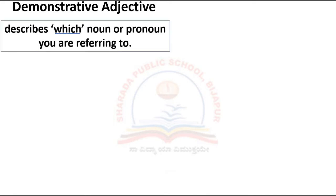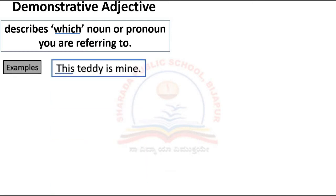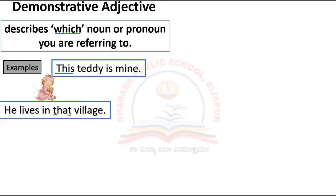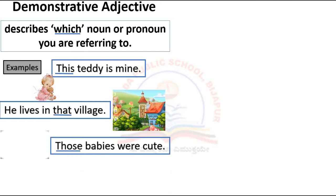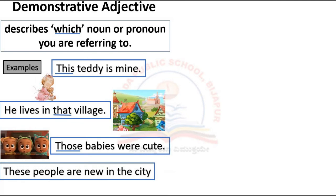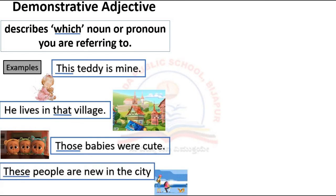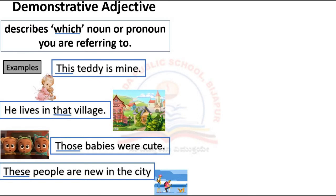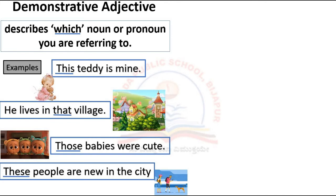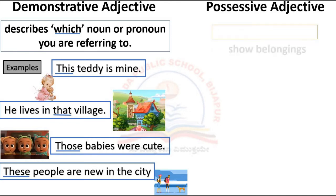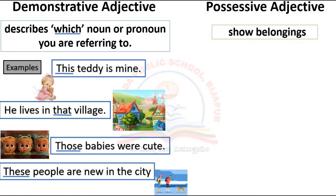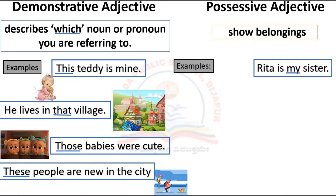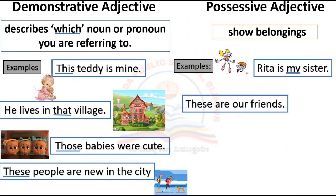Demonstrative adjective describes which noun or pronoun you are referring to. Examples: 'This teddy is mine.' 'He lives in that village.' 'Those babies were cute.' 'These people are new in the city.' The underlined words in these sentences are demonstrative adjectives.